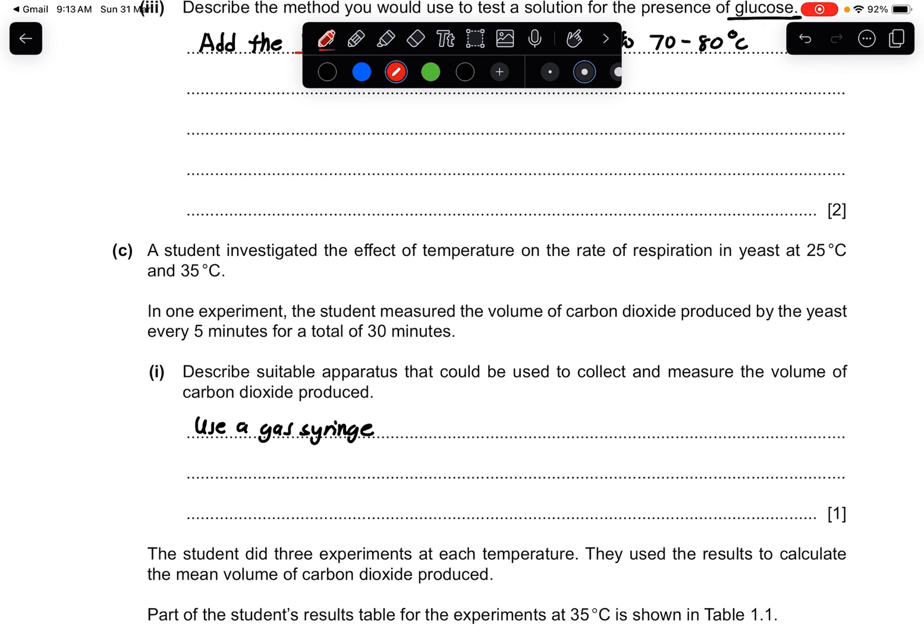Part C: A student investigated the effect of temperature on the rate of respiration in yeast at 25 degrees and 35 degrees. In one experiment, the student measured the volume of CO2 produced by the yeast every 5 minutes for a total of 30 minutes. Part 1: Describe suitable apparatus that could be used to collect and measure the volume of the carbon dioxide produced. So you want to collect and also measure the volume, and CO2 is also a gas. So pretty much it's the same knowledge that you apply to your planning investigation - the six marker. You will use a gas syringe or probably an inverted measuring cylinder that would also work. Also maybe collect over water under the measuring cylinder. These are also acceptable. But the simplest answer is using a gas syringe.